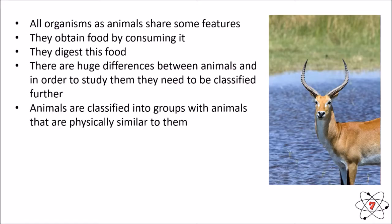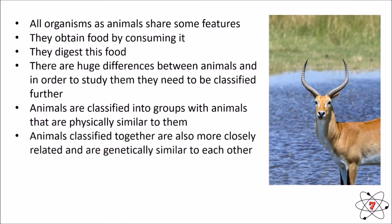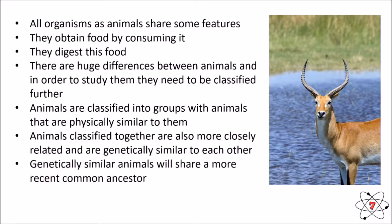Generally, when animals are classified into groups, we're put into groups with other animals that are physically similar. But it's not just the physical similarities we look at — we also look at the genetic similarities. So when we group animals, we group them by their physical features and by their genetics. Generally, genetically similar animals will also share a common ancestor with each other.